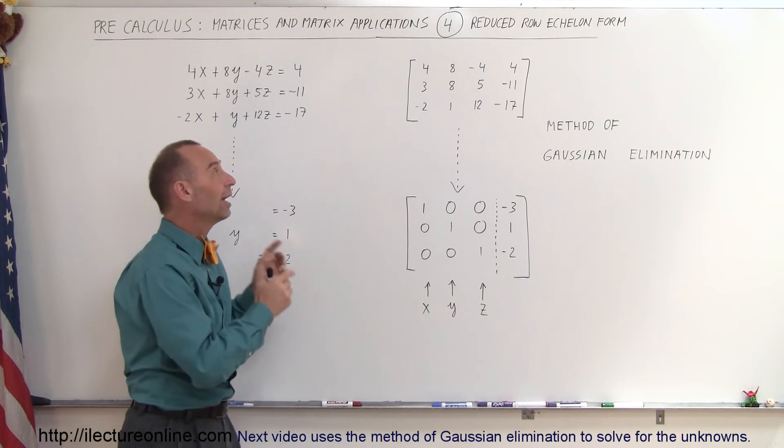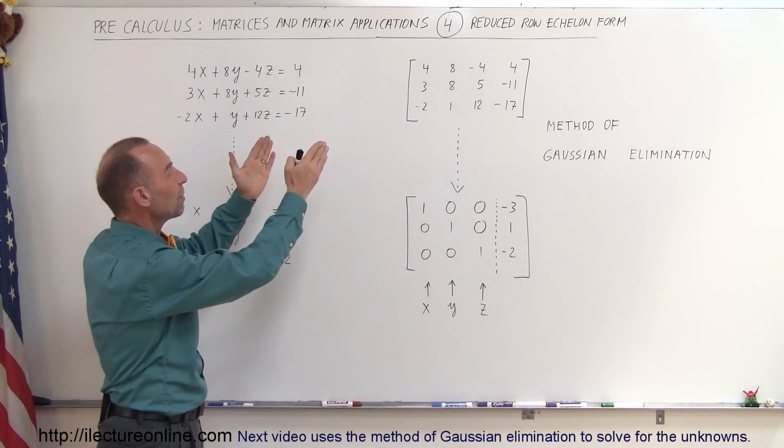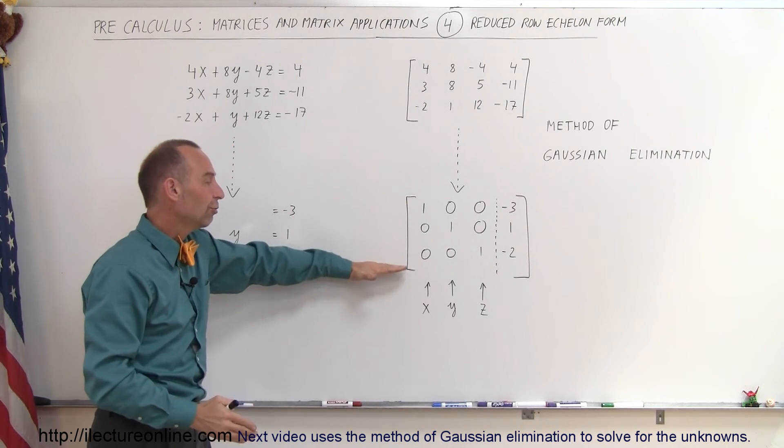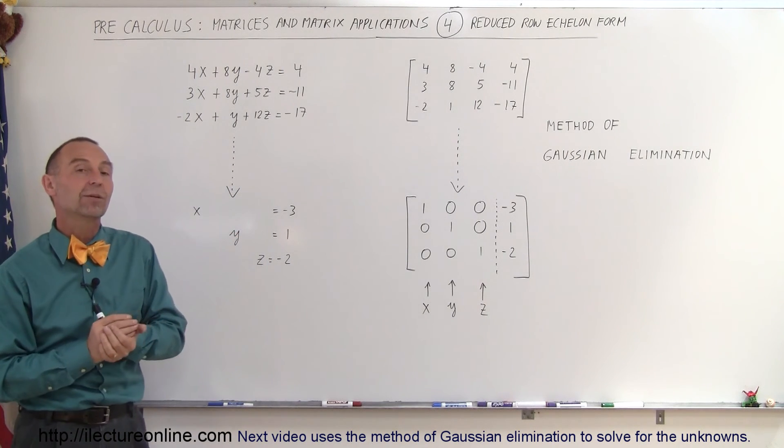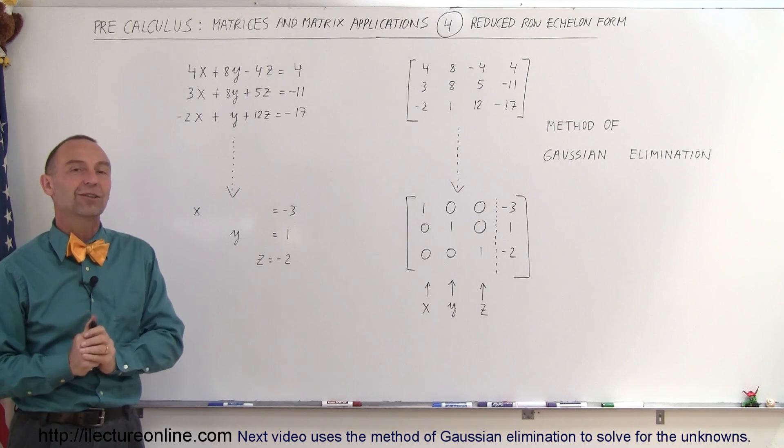So let's go to the next video now and see how we actually take this matrix and solve it, put it in this form so we can solve our X, Y, and Z. And that's called the method of Gaussian elimination and we'll see that in our next video.